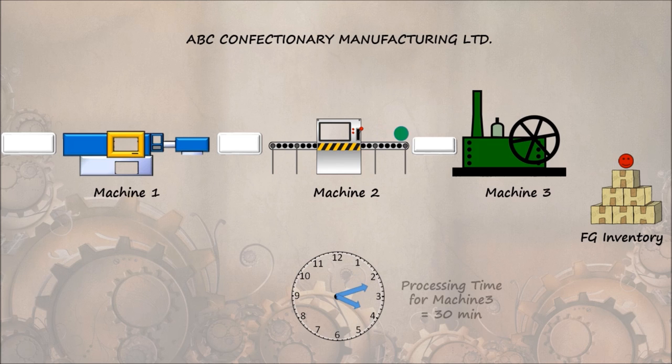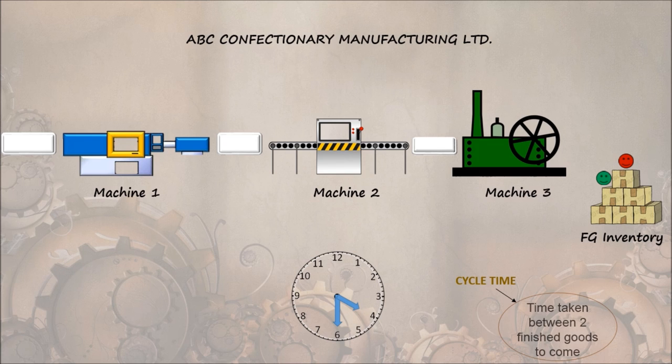Now the time on the clock reads 4. The second product will be processed in Machine 3 and will come out as finished goods in half an hour. So cycle time is defined as the time taken between two finished goods. In this case, cycle time is half an hour.